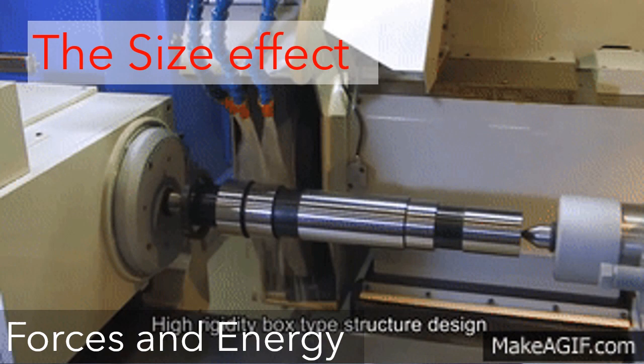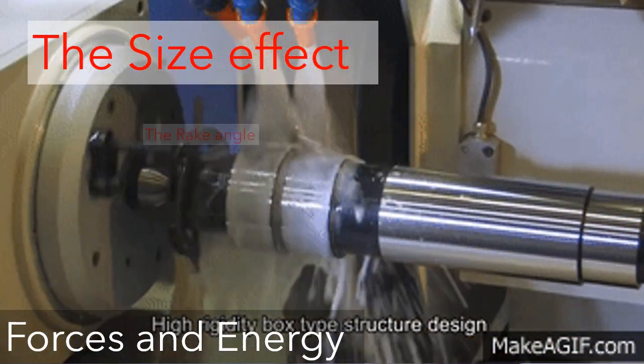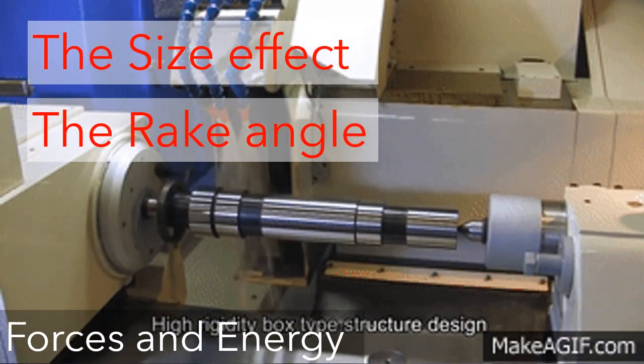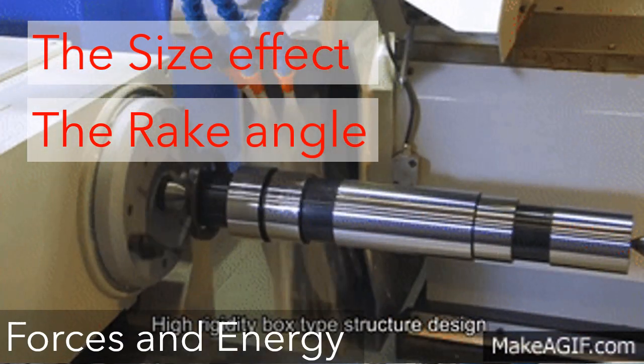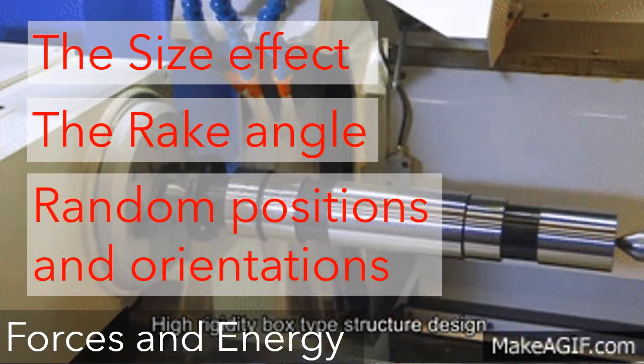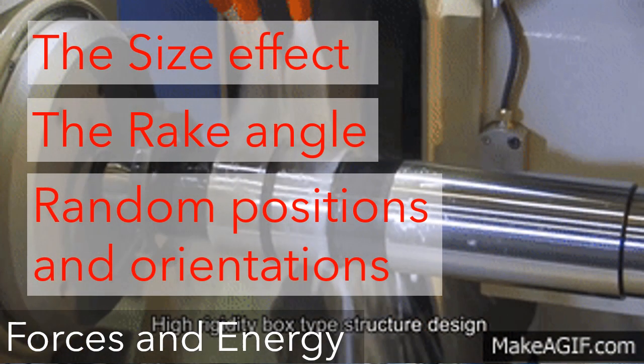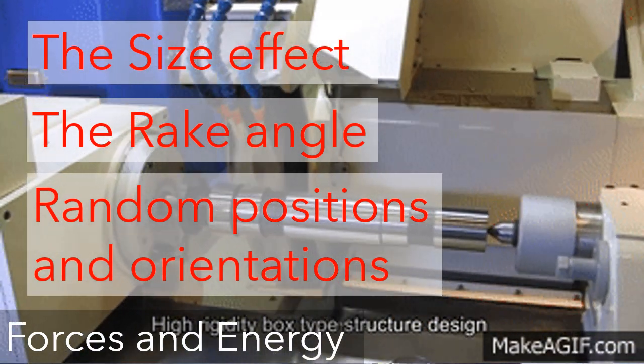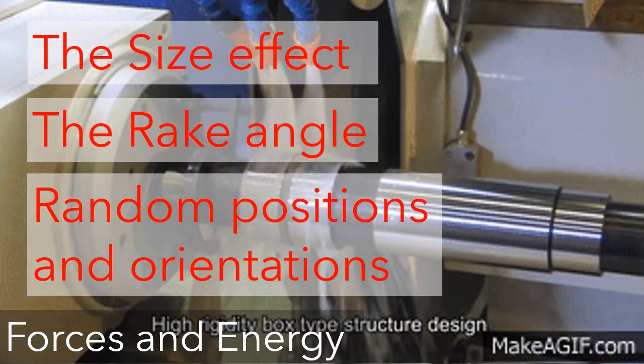First, the size effect in machining. Second, the individual grains in the grinding wheel possess extremely negative rake angles. Third, the specific energy is higher in grinding because not all the individual grits are engaged in actual cutting.